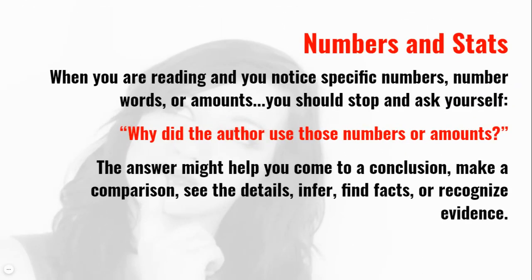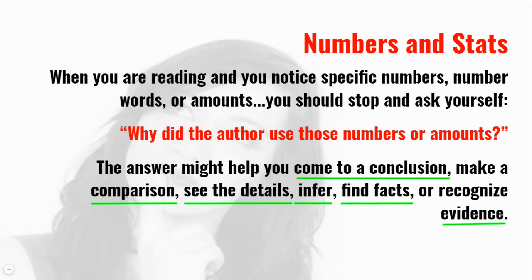To review, here's how we need to apply our new learning to all nonfiction texts that you read. We now know that we need to pay close attention to the numbers and amounts that we see. When you are reading and you notice specific numbers, number words, or amounts, you should stop and ask yourself: why did the author use those numbers or amounts? The answer might help you come to a conclusion, make a comparison, see the details, infer, find facts, or recognize evidence. Thinking deeper about the text in this new way will help you understand what you are reading in a much more meaningful way.